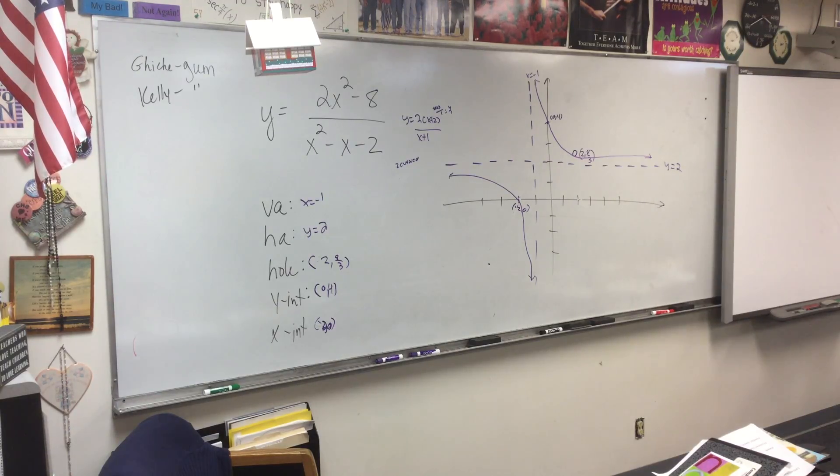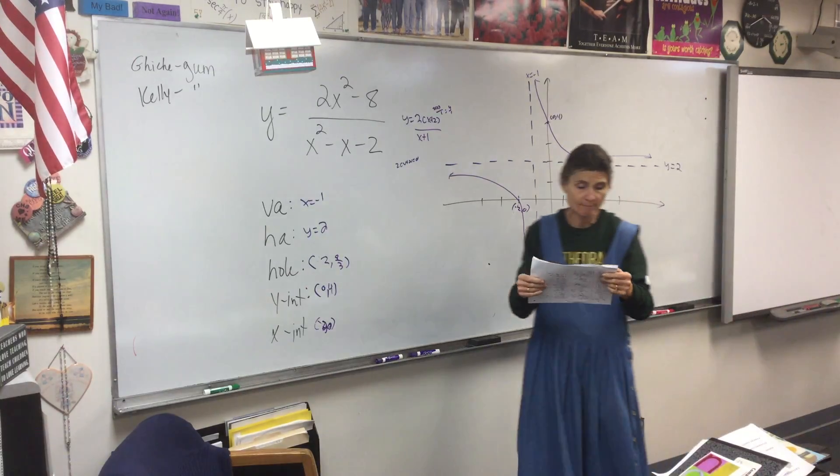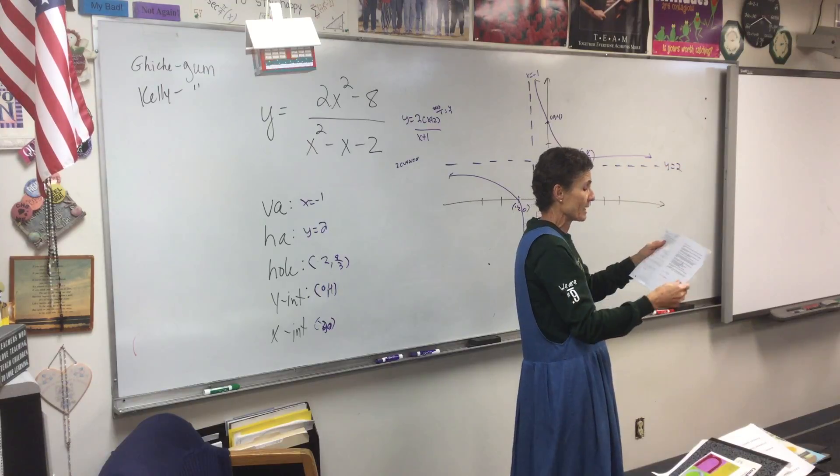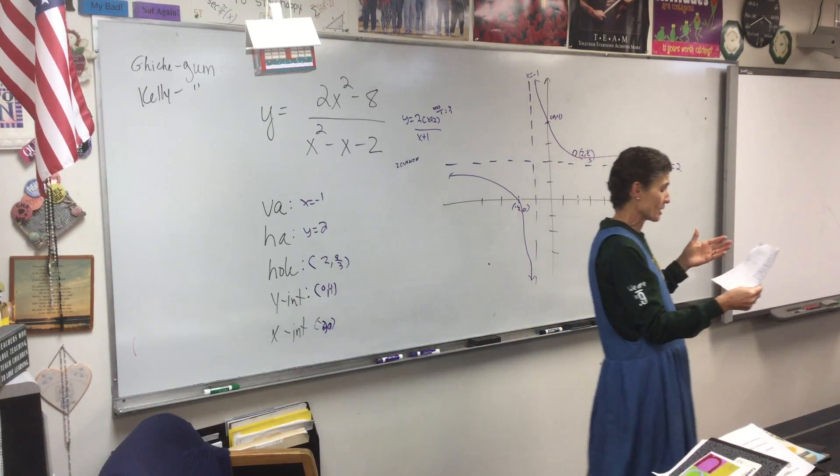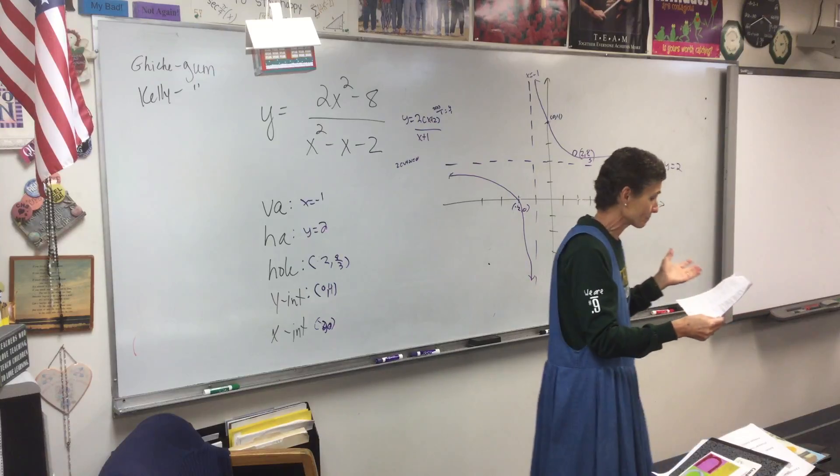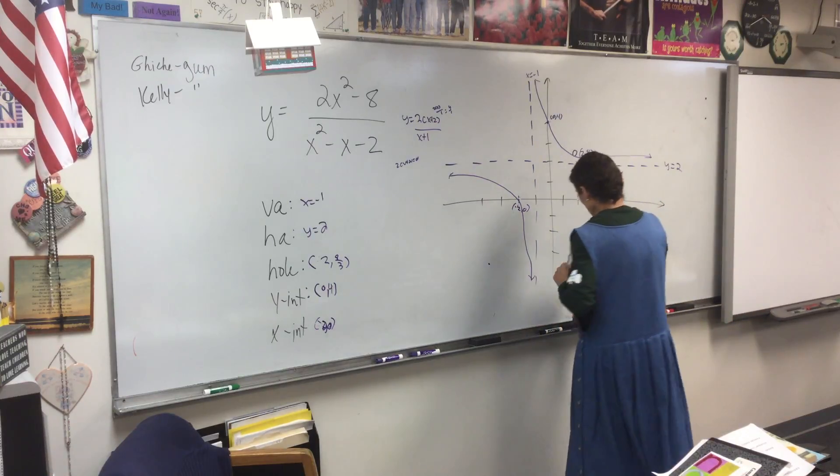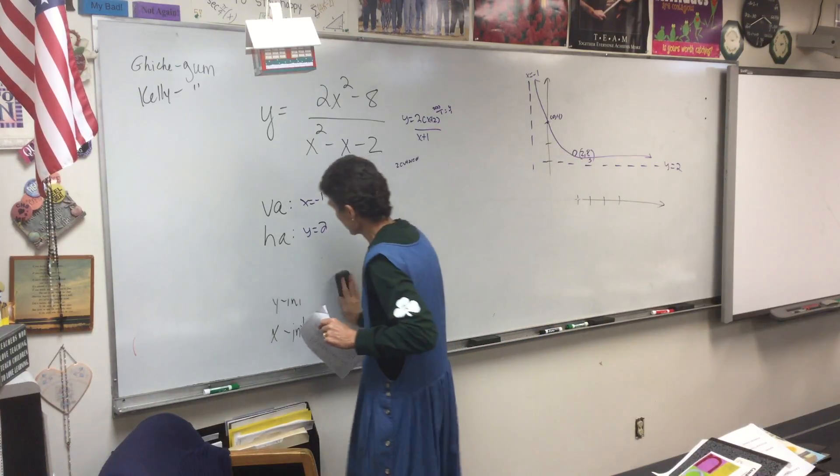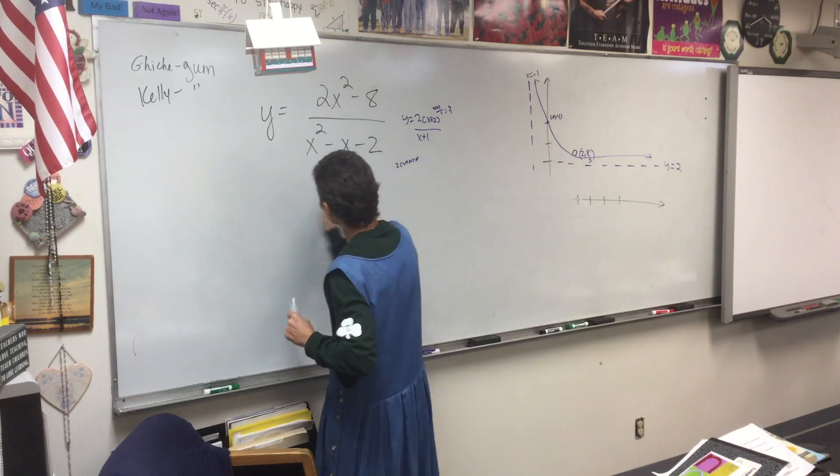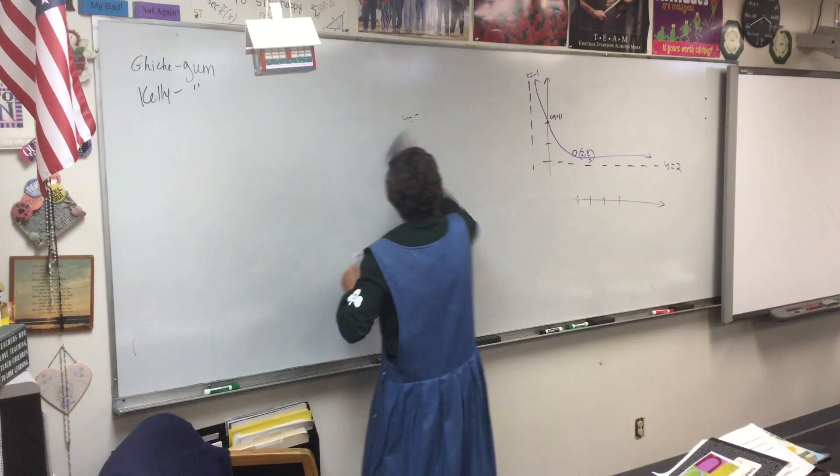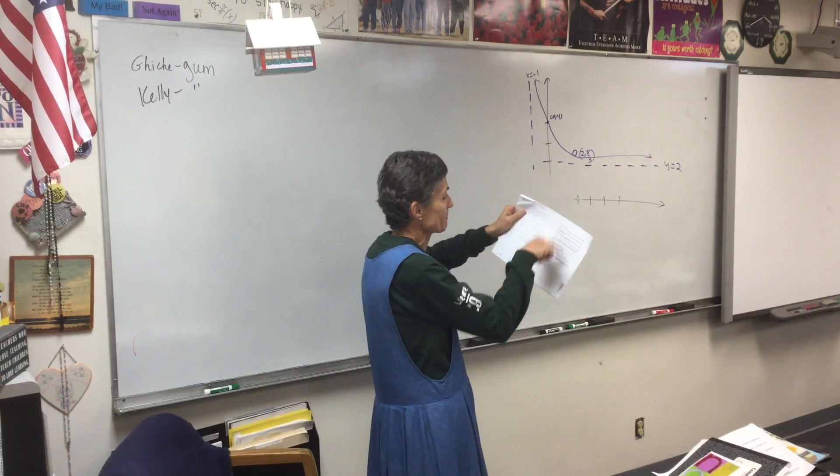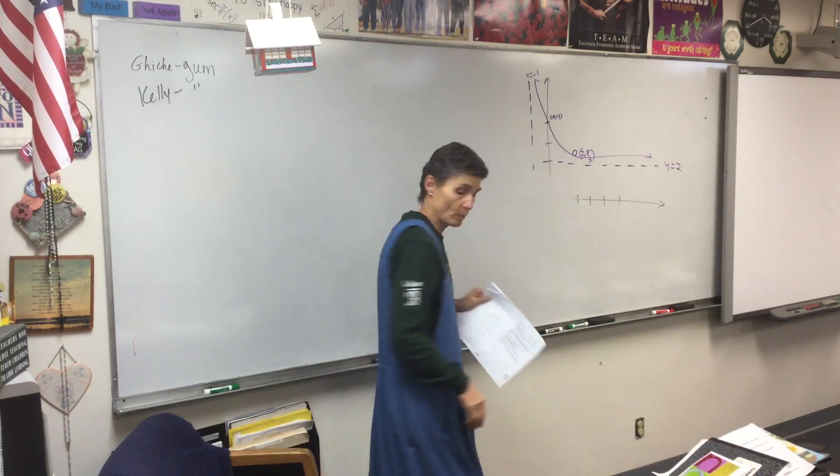Alright, so everybody on the first page. It says Pre-Cal A Chapter 3 Review Sheet, and there's a little thing that says circle, use calculator. Anything that's circled is going to be a calculator problem. We are not going to attempt to do these problems on the sheet. You have a piece of paper out and you're working along with me.